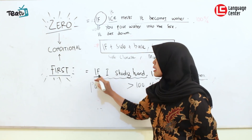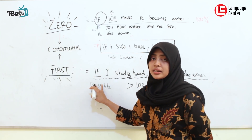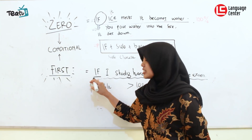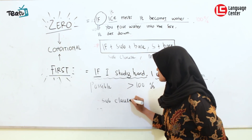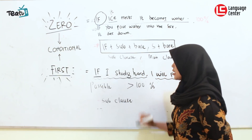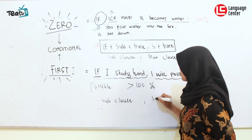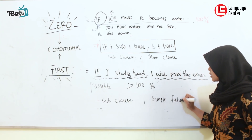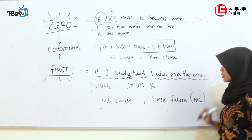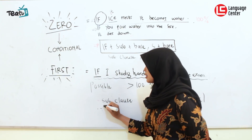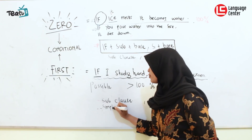The if-clause — or the sub clause, which is a clause followed by a conjunction — uses the present form. Then the main clause uses simple future. So: sub clause uses simple present (present form), and main clause uses simple future.